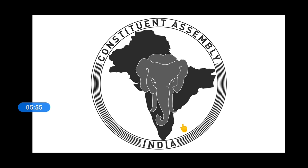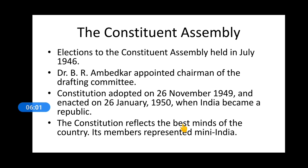The Constituent Assembly was formed for drafting the constitution. The drafting of the constitution was done by an assembly of elected representatives selected from different places all over India. The election of the Constituent Assembly was held in July 1946, wherein Dr. B. R. Ambedkar was appointed as the chairman of the drafting committee.